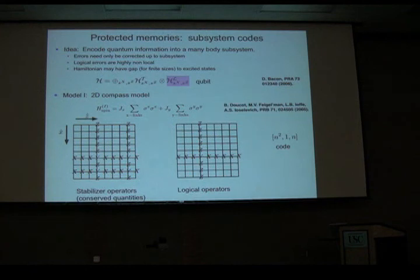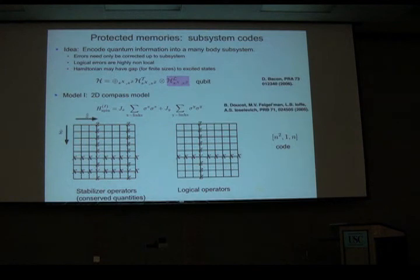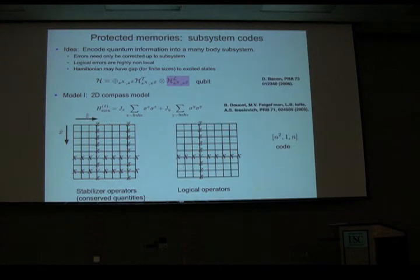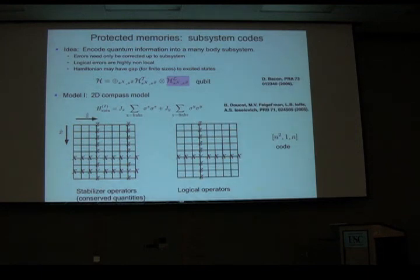Dave Bacon gave a very nice introduction to subsystem codes. The general idea is that you want to encode in a small subsystem of some many-body state. The reasons for doing this: if the many-body state corresponds to ground states of a Hamiltonian, there might be a gap against excitations, providing some protection against errors. Also, you might have a structure so that your logical gate operations would be highly non-local strings or domains of operations, which the environment would be very unlikely to perform.